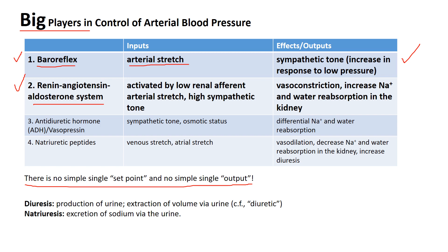The primary input of the renin-angiotensin-aldosterone system is the stretch or distention of small afferent arterioles in the kidney. Hormones upregulated or depressed by this system regulate renal water and sodium excretion. Diuresis means the production of urine; natriuresis means the excretion of sodium via the urine. People also talk about pressure diuresis and pressure natriuresis — those are the relationships between arterial pressure and urine volume and sodium output.